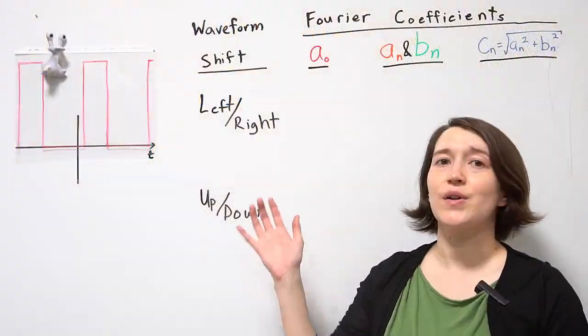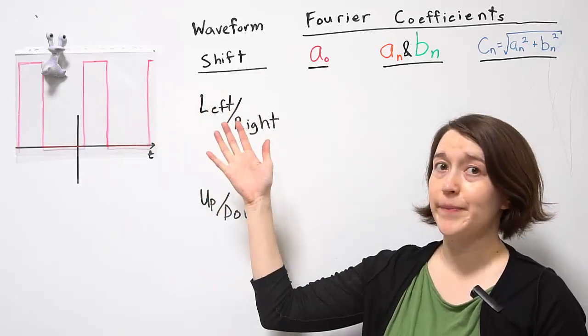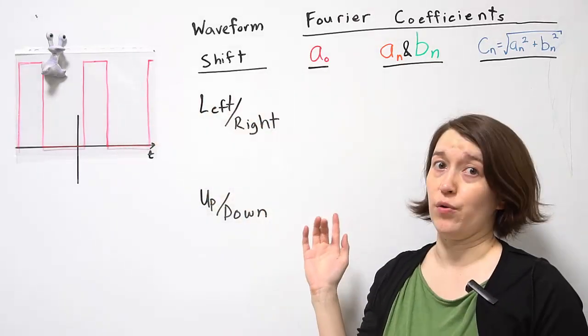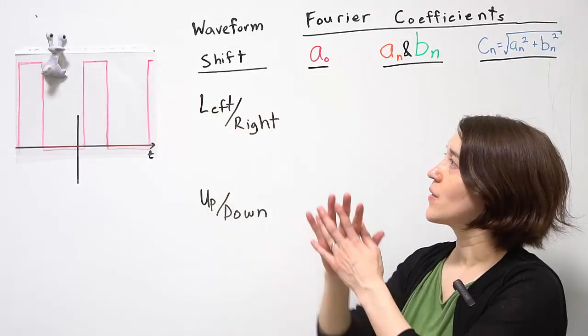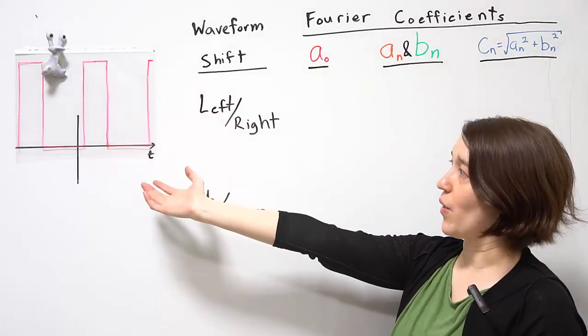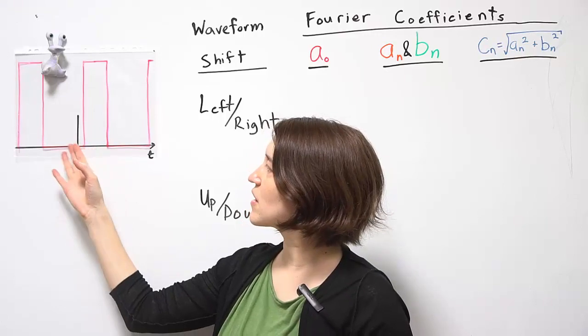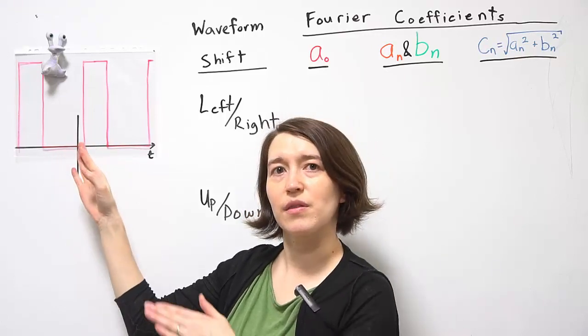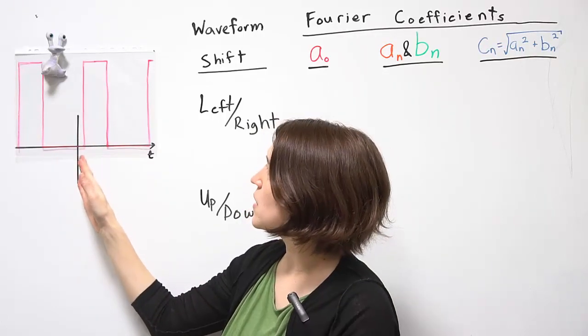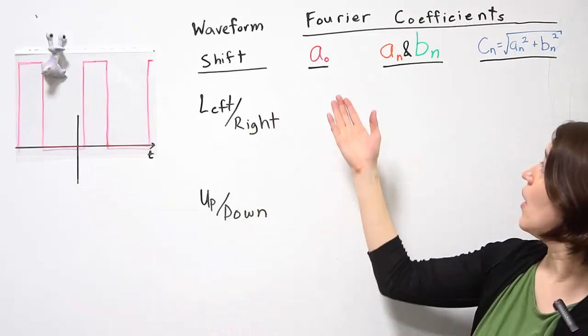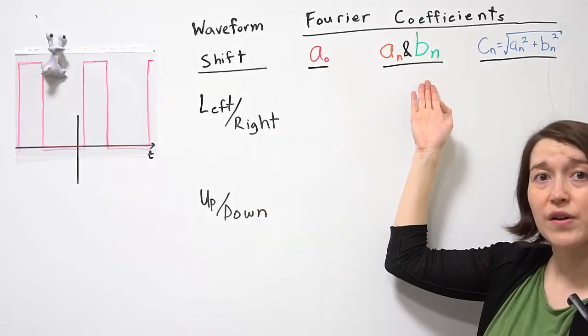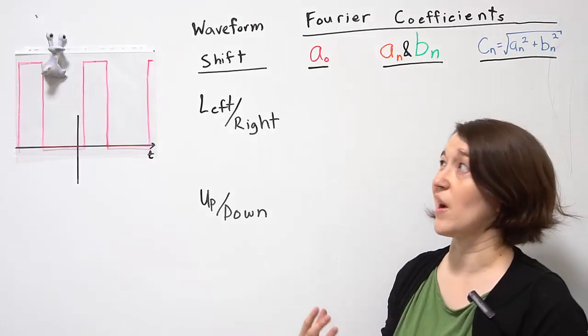Here we'll discuss how shifting the waveform affects the Fourier coefficients. Valerie has drawn an arbitrary waveform for us, and you can see it doesn't really exactly line up with the origin here.